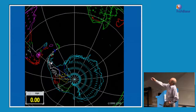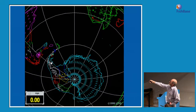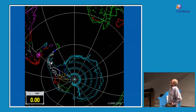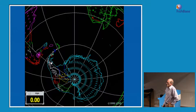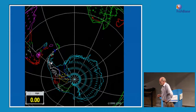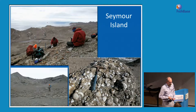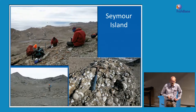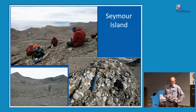There's a key fossil site indicated by the white arrow here. 40 million years ago, as today, it was about 64 degrees south latitude. It's called Seymour Island, and this is probably one of the most important fossil sites in the southern hemisphere, and one of the very few fossil sites for Antarctic fishes.